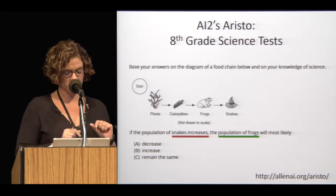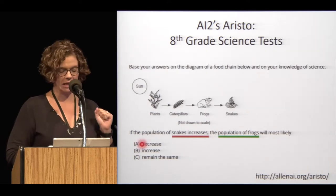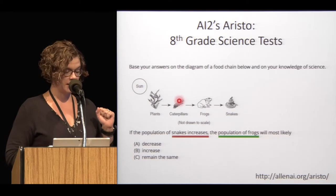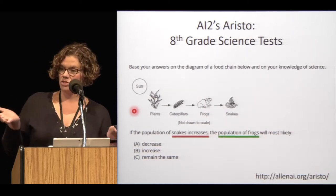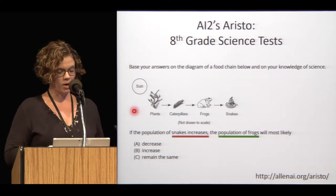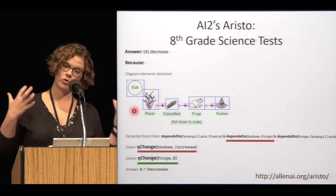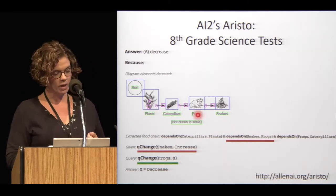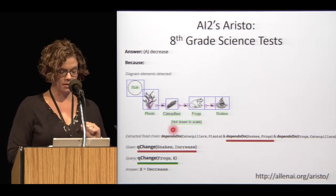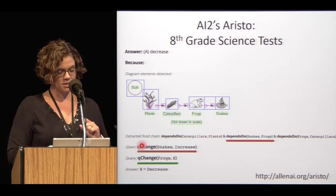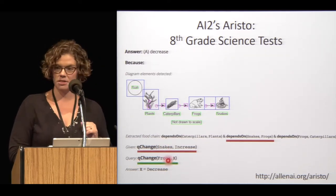Here's another question involving a diagram: a life cycle showing snakes eat frogs, frogs eat caterpillars, caterpillars eat plants, and plants are powered by the sun. The question is: if the population of snakes increases, what happens to frogs? Aristo needs to use computer vision to parse this diagram, figure out which way the arrows point, and extract dependencies — for example, that snakes depend on frogs. It knows that if snakes increase, frogs will decrease.